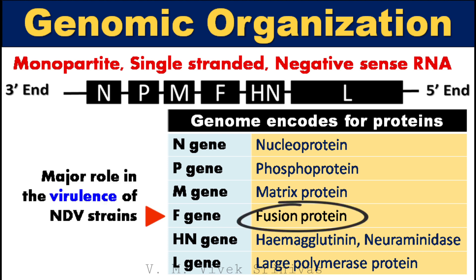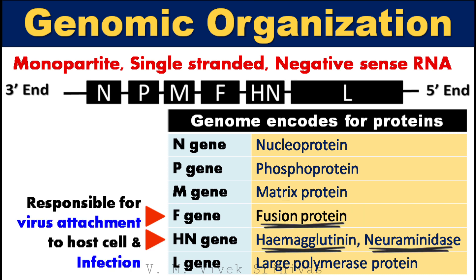Fusion protein plays a major role in the virulence of Newcastle disease virus strains. The three important proteins — hemagglutinin, neuraminidase, and fusion protein — are the immunodominant proteins which play a major role in antigenicity, that is, virus-neutralizing antigens. These proteins bind to the host cell receptors, causing the infection and pathogenesis of this virus.